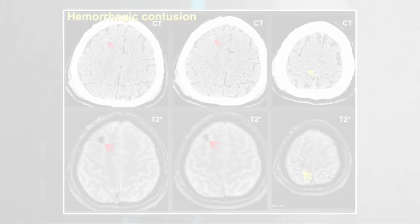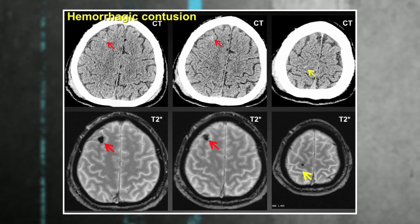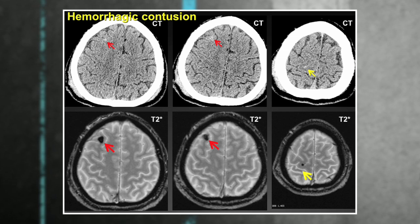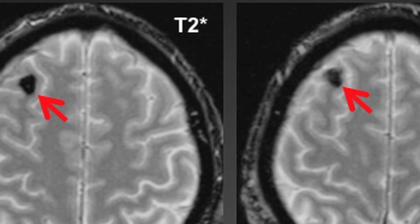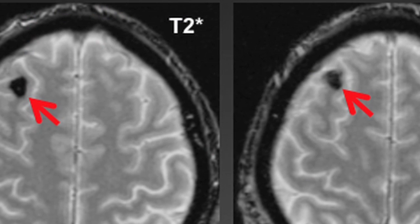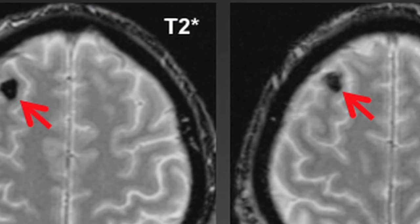Some of the patients have lesions on their MRIs due to the head injury, such as contusions — basically bruises on the brain — which affect mainly the cortex of the brain, the cerebral cortex brain matter.